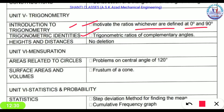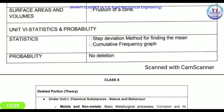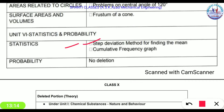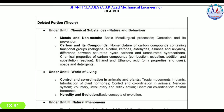In Trigonometry, the ratios of complementary angles have been removed. Heights and Distances — which are important real-life application topics — have also been removed as unnecessary. The problem on the central angle of 120 degrees and the surface area and volume of a frustum of a cone have been deleted. In Statistics and Probability, the step deviation method for finding the mean has been removed.